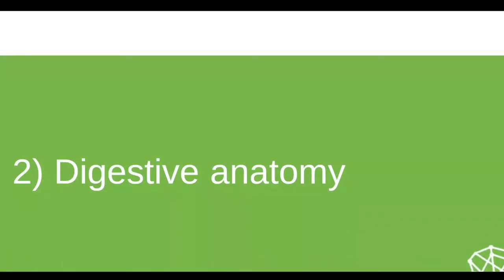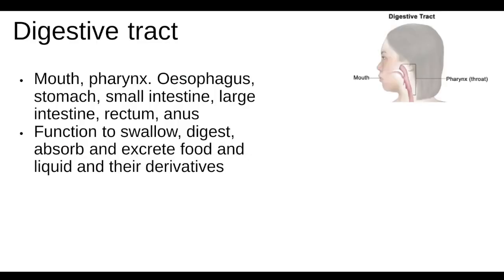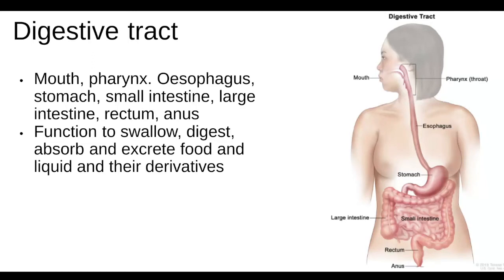Moving to digestive anatomy — the digestive tract runs all the way from the mouth down the oesophagus into the stomach, through the duodenum and small intestine, into the large intestine or large bowel, across to the rectum and finally the anus. The digestive tract's main function is to introduce food, break it down and release nutrients for absorption, and then process and excrete waste products.